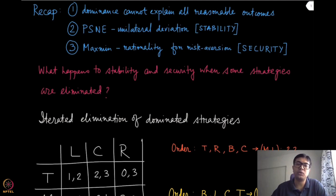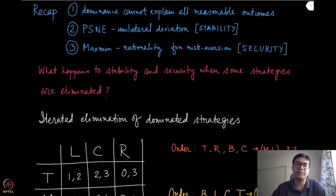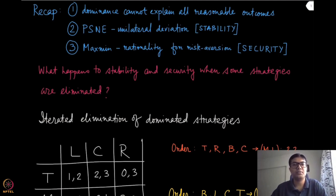Maximin is essentially a rationality for risk aversion when one player is not sure about whether the other player is going to play according to the rationality and intelligence we have assumed. It gives some sort of security that even if they play the maximin strategy, they are guaranteed to get that maximin value. In this module, we are going to ask what happens to notions like pure strategy Nash equilibrium and maximin properties when we eliminate some dominated strategies.